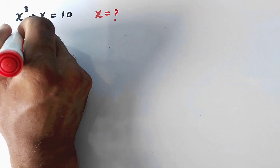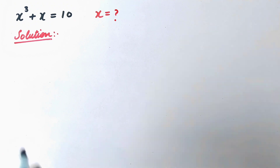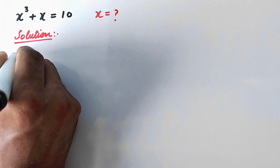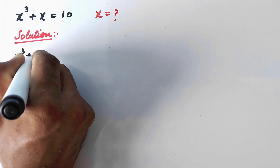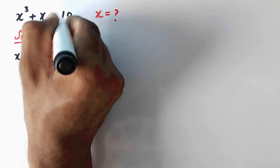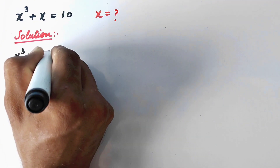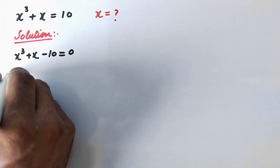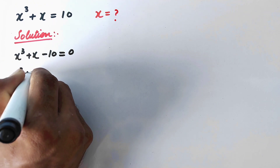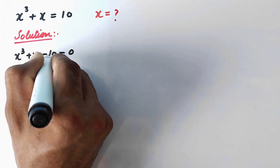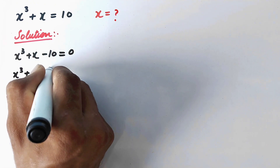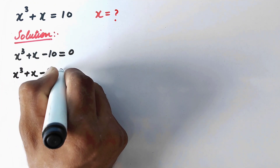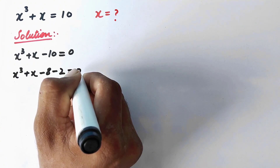Let us see the solution. In the first step we can write x to the power 3 plus x, and move 10 to the other side so it becomes minus 10, equal to 0. We can further factorize minus 10 as minus 8 minus 2.